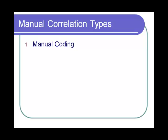First, manual coding. Here, the performance engineer will manually check the LoadRunner script to correlate the dynamic values. It's a tedious process.